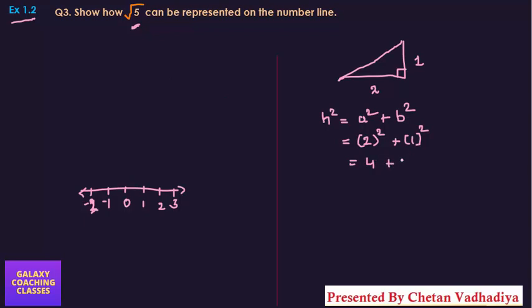Plus 1² will be 1, so 4 + 1 = 5. Therefore h² = 5, so h = √5.